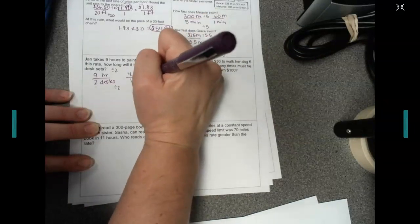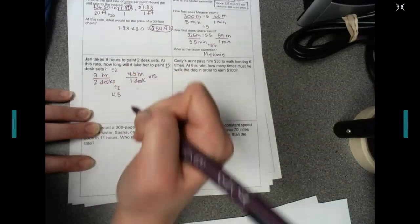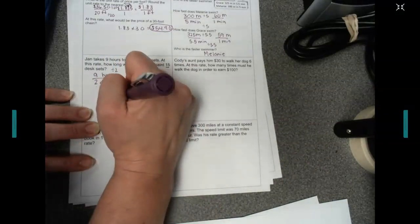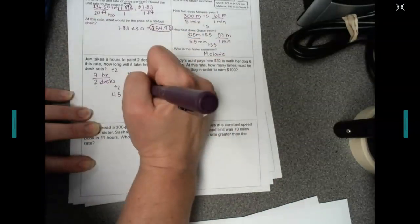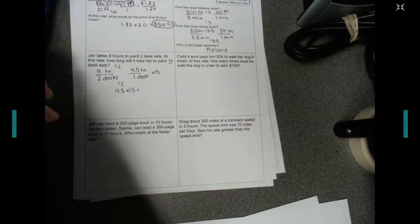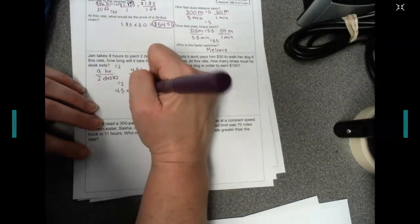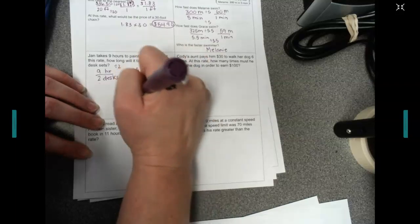Then, we're going to multiply this by 15. So, you're going to take, in your calculator, 4.5 times 15. And when I do that, I get 67.5 hours. So, to do 15 desks, it takes this long.